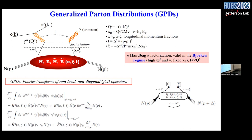Student question: what does 'soft' mean in this context? The speaker explains: 'soft' is the opposite of 'hard.' A hard interaction means interacting at high Q² on something point-like — perturbative QCD applies. Whatever cannot be described perturbatively is called soft, and we have to use things like PDFs, form factors, or GPDs to describe this part. They are linked to QCD but cannot be directly calculated in QCD — they need to be measured.